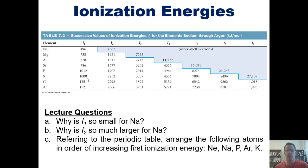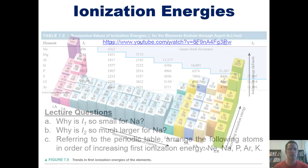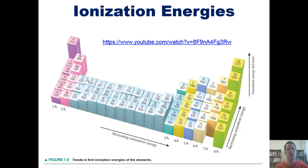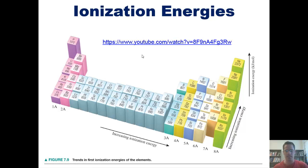Referring to the periodic table, arrange the following atoms in order of increasing first ionization energy. This table shows us various first ionization energies for most of the elements on the periodic table — that is, the amount of energy required to remove a single electron from each respective atom. There's also a great video that shows this graphically; I will post a link that you can click on to open it in a separate tab.